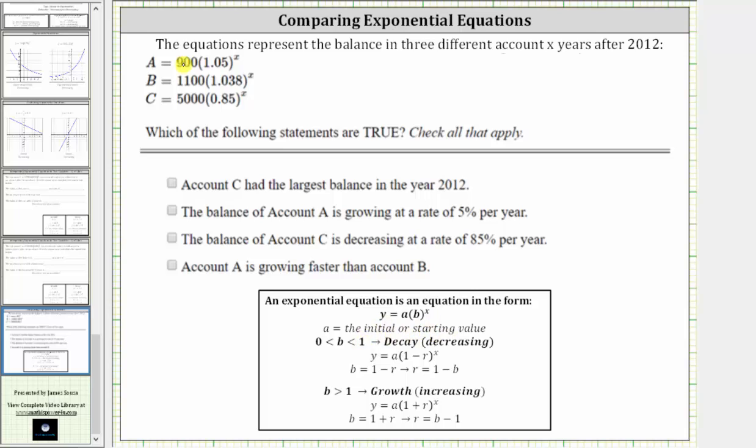So in 2012, account A had a balance of $9,000, account B had a balance of $1,100, and account C had a balance of $5,000, and therefore account C had the largest balance in the year 2012 is true, and therefore we check this box.